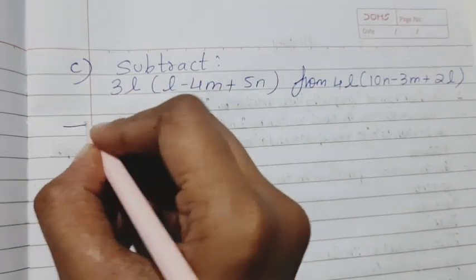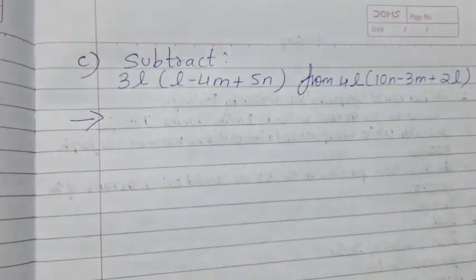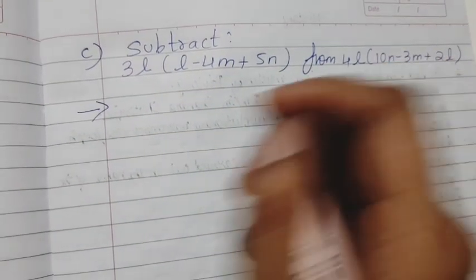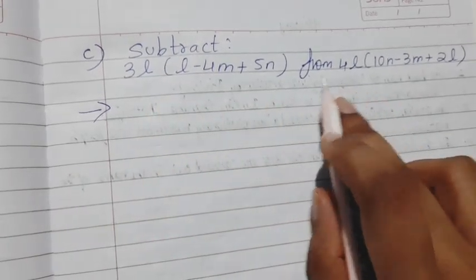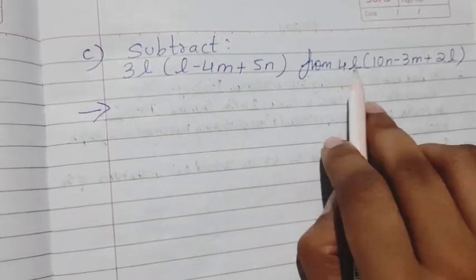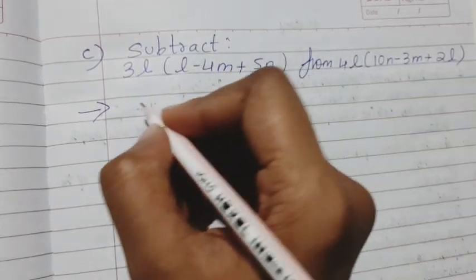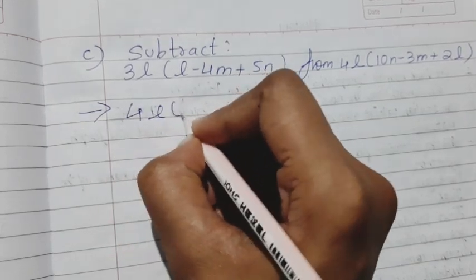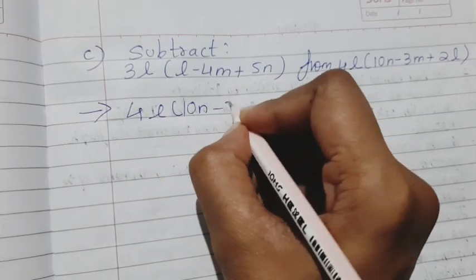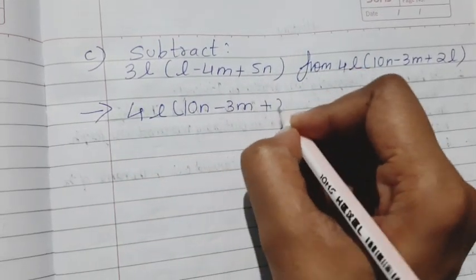First, you can start solving this. We are subtracting this from this, means this will come first. Okay, write down 4l(10n - 3m + 2l).